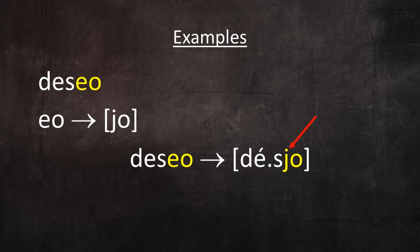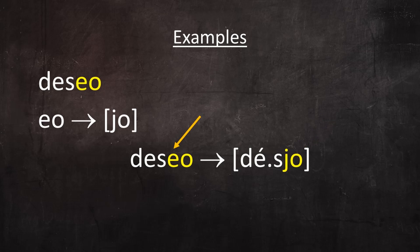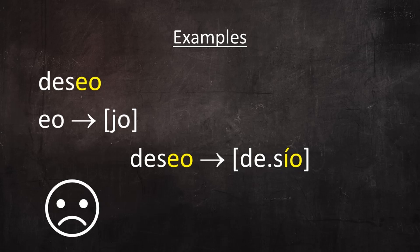Even if you put the stress on the second syllable it still wouldn't fall on the E — it would fall on the nucleus of that syllable. In order for the hiatus in deseo to resolve to a diphthong, the stress would have to shift, and that simply isn't allowed in Spanish phonology. And if you change the E to I and leave the stress where it is, the word would be desío — which is just a different hiatus, not a resolved diphthong. Because of where the natural stress falls, the EO hiatus in deseo cannot resolve to a diphthong.